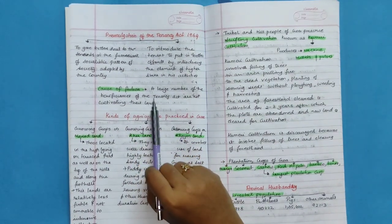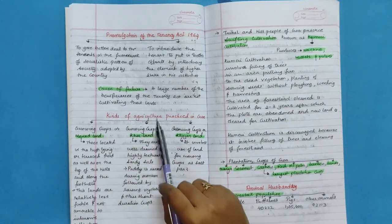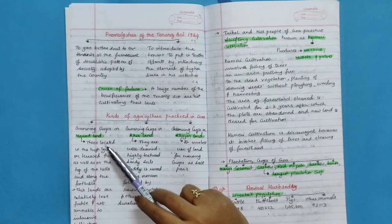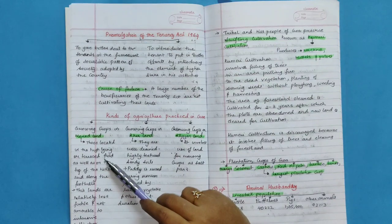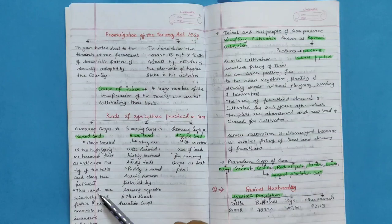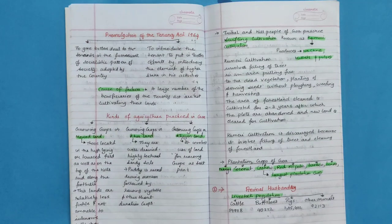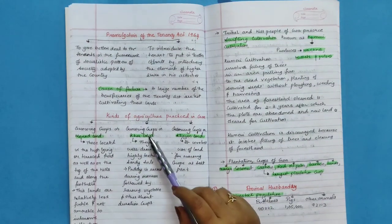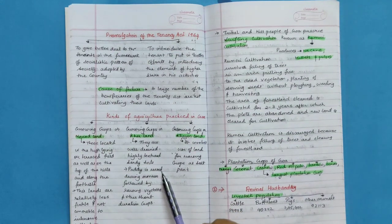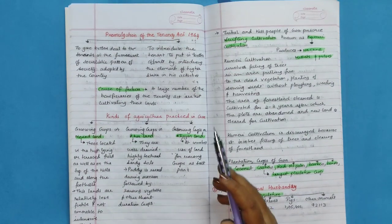Kinds of agricultural practice in Goa. Growing crops in morod land like those located in the high-lying or terraced field as well as on the top of the hills and along the foothills. These lands are relatively less fertile and not amenable to intensive cultivation. Growing crops in Kher land. They are well-drained, highly textured, sandy soil. Paddy is raised during monsoon followed by raising vegetables and other short-duration crops.